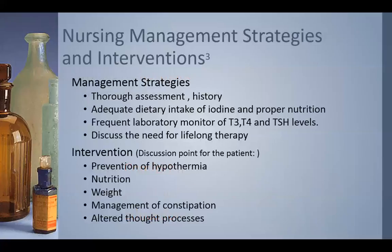Nursing strategies and interventions begin with an accurate, thorough assessment of all body systems to identify where the patient is having the most problems. We'll look at their history for any family diseases that might cause hypothyroidism, ensure they're getting plenty of iodine in their diet, and provide proper nutrition guidance since the stomach cannot absorb nutrients adequately. These patients must have T3, T4, and TSH levels monitored regularly, and they need to understand this is a lifelong therapy. Comfort measures include monitoring weight to see if medications are working.